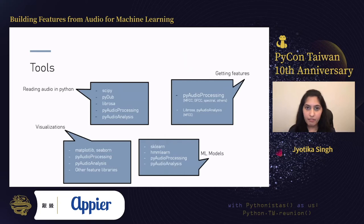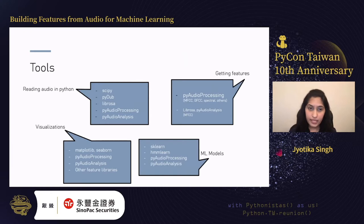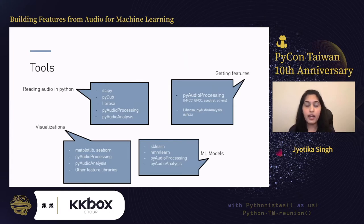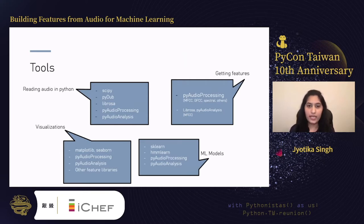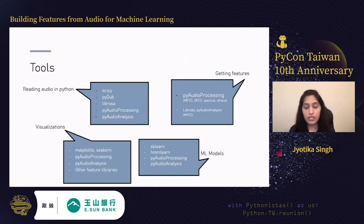Here are some tools that have proved really beneficial in audio processing and analysis. If you just want to read and visualize audio, many libraries can help. For getting features, audio processing libraries help you get MFCC, GFCC, spectral, and other features. For ML models, you can use any of your favorite backend libraries. Visualizations can also be done using popular libraries or pyAudioProcessing or pyAudioAnalysis. We will be focusing on features directly extracted from audio into numerical representations like the cepstral features.